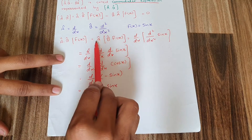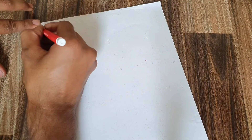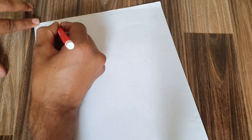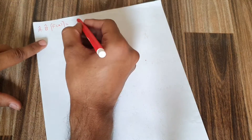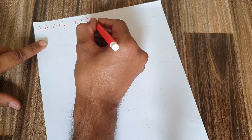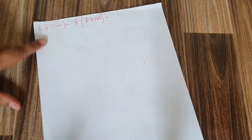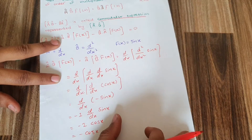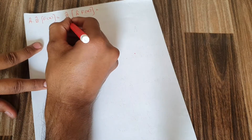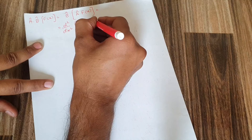Now I will change the order of the operators. Writing B·A·f(x): in this case, I apply A on f(x) first and then apply B. Plugging in the values: B is d²/dx², A is d/dx, and f(x) is sin(x).